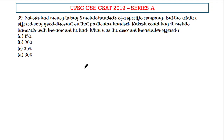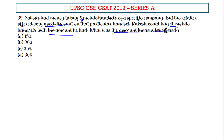Welcome to Aptitude Destination. Please pause the video and read the question completely. Rakesh had the money to buy 8 mobile handsets of a specific company, but the retailer offered a very good discount on that particular handset. Rakesh could buy 10 mobile handsets with the same amount. What was the discount the retailer offered?